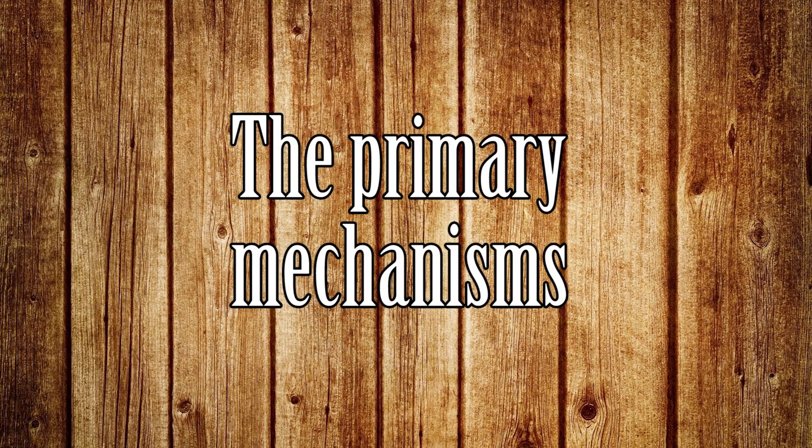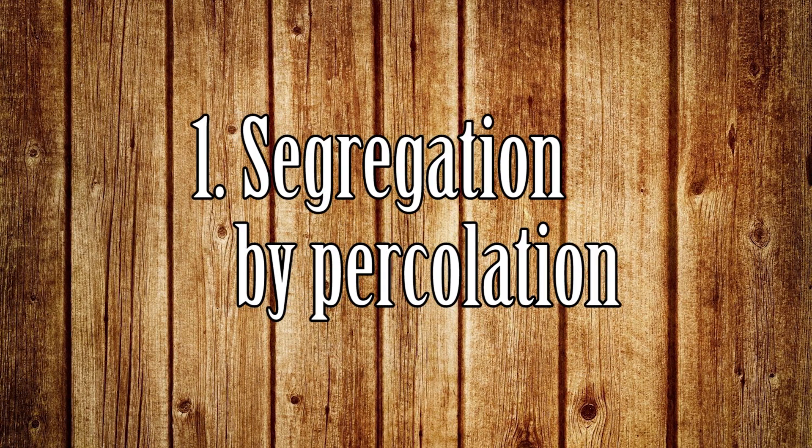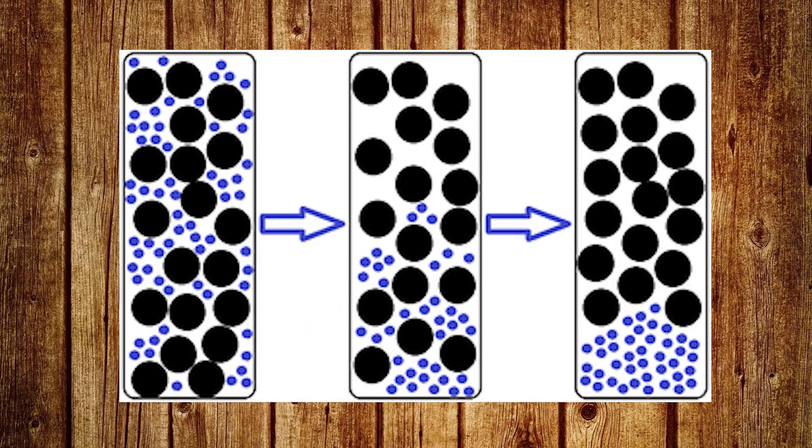There are two primary mechanisms for this effect. The first one is segregation by percolation. In this process a gap is left under jumping big particles that can be filled by small particles, so that after the big particles have settled back down, they happen to be at a higher position than before. As you can see in the image.